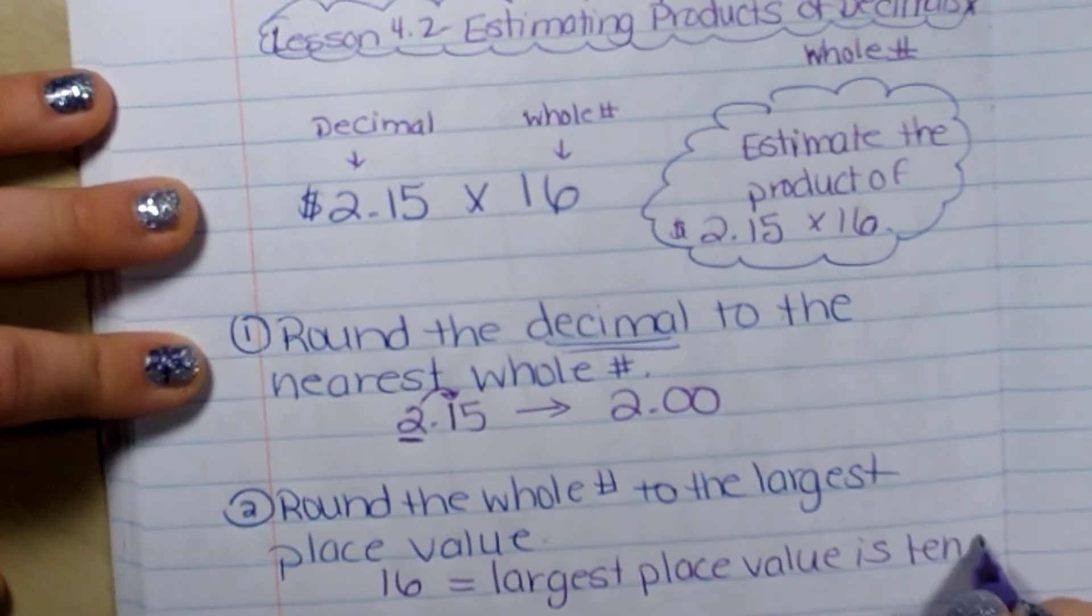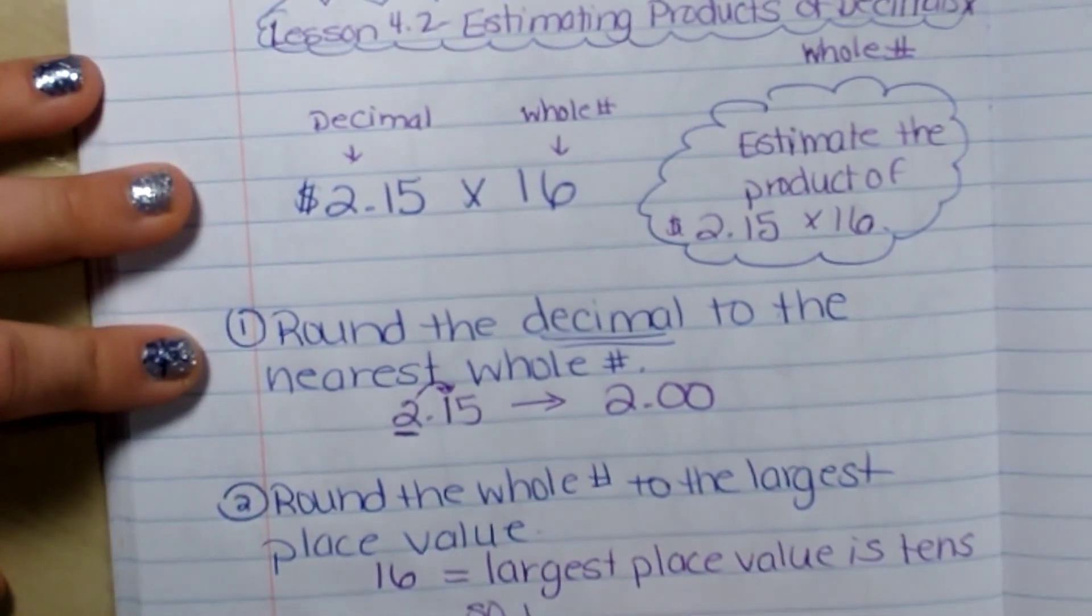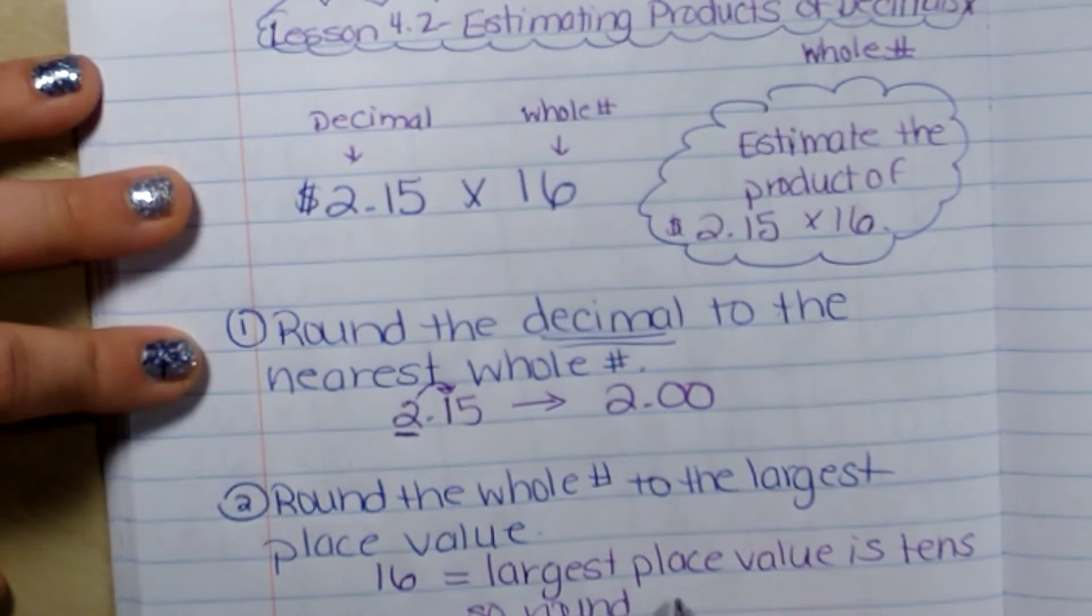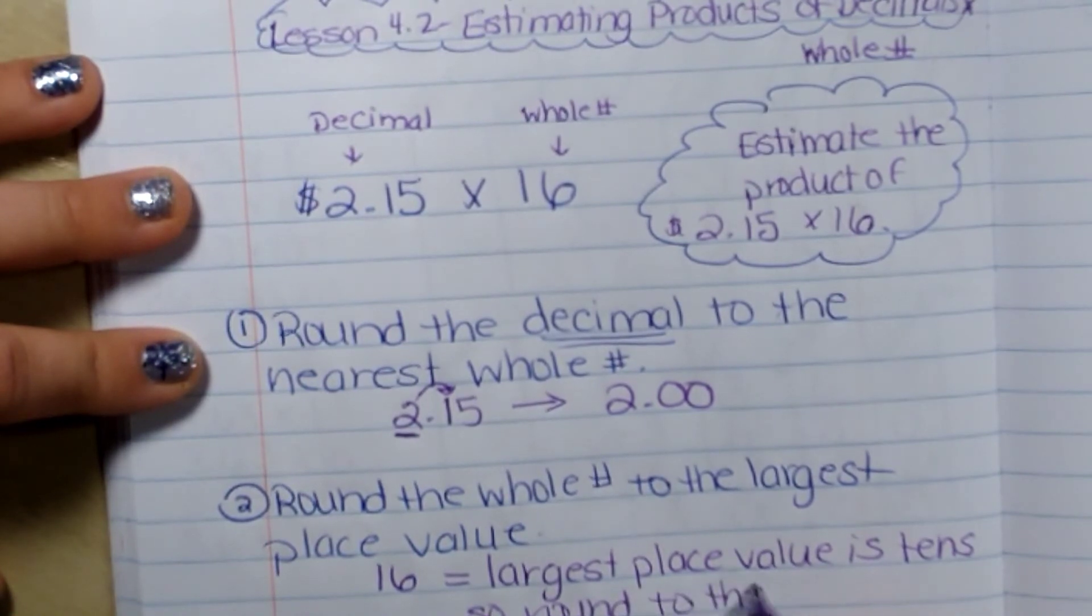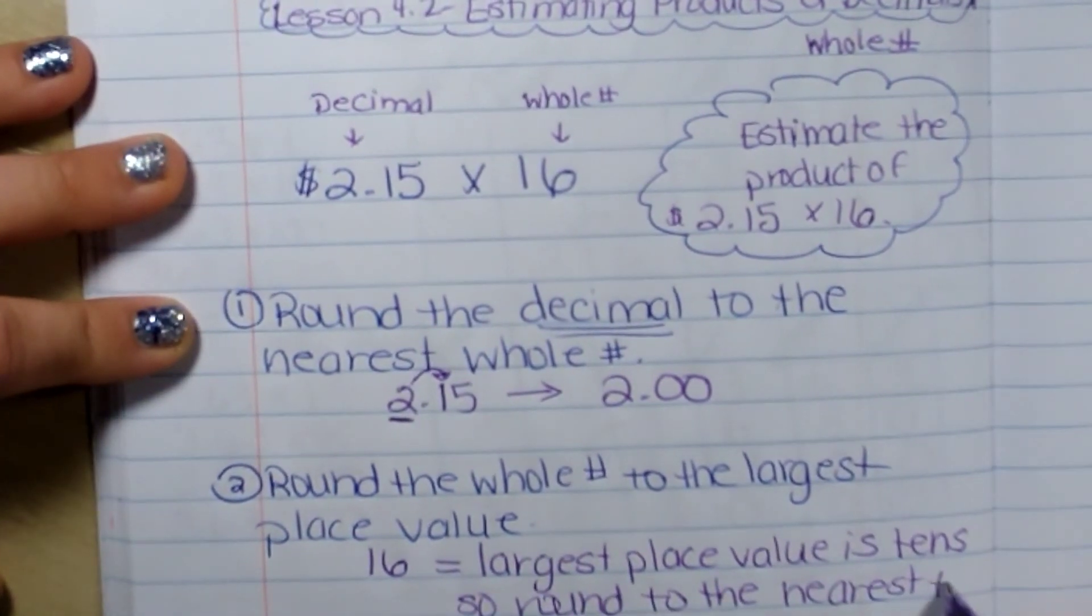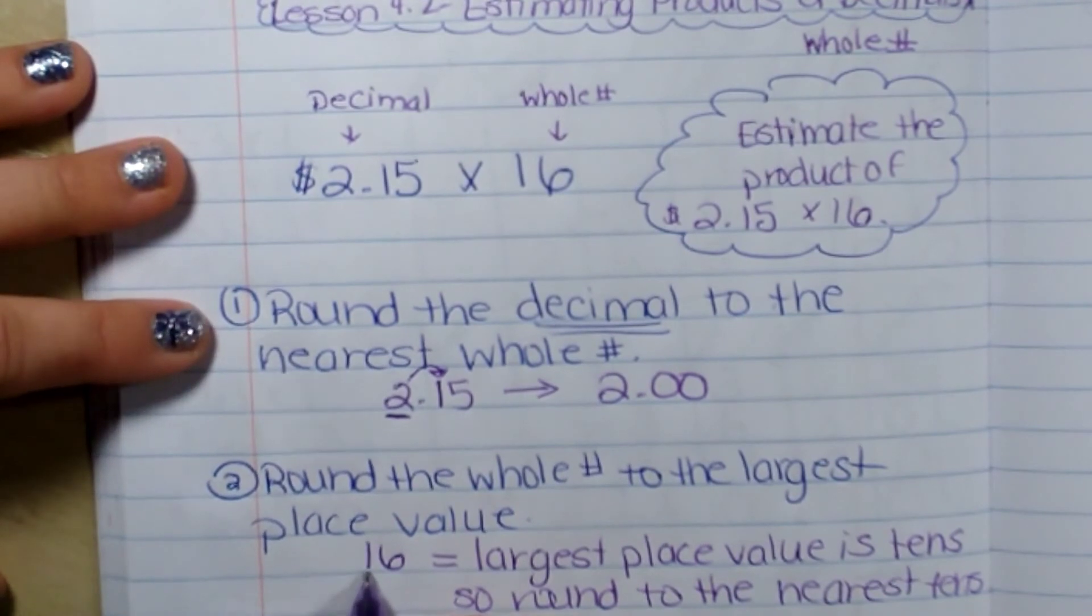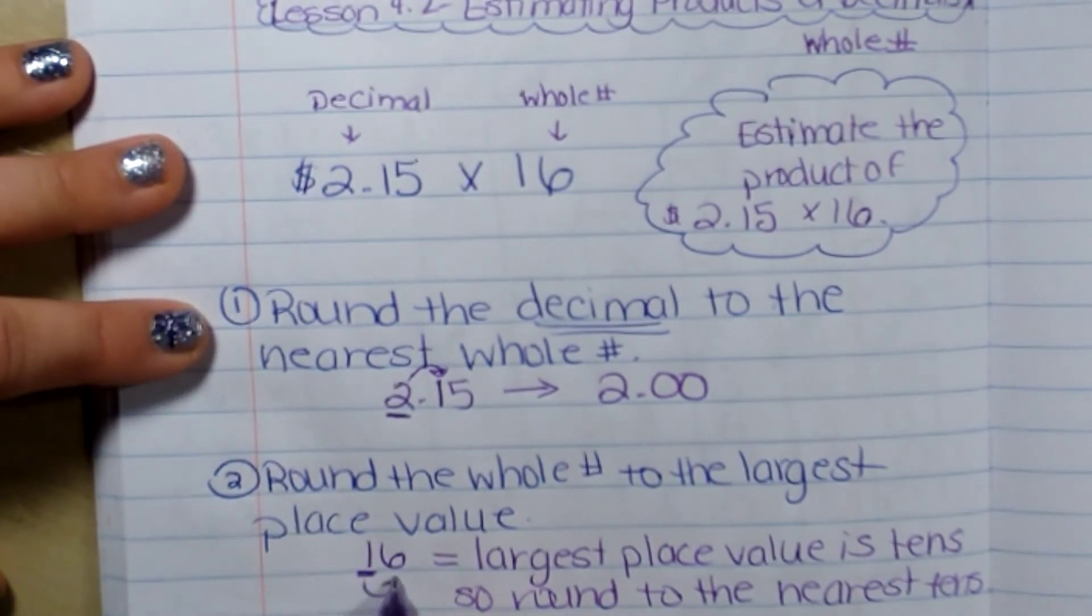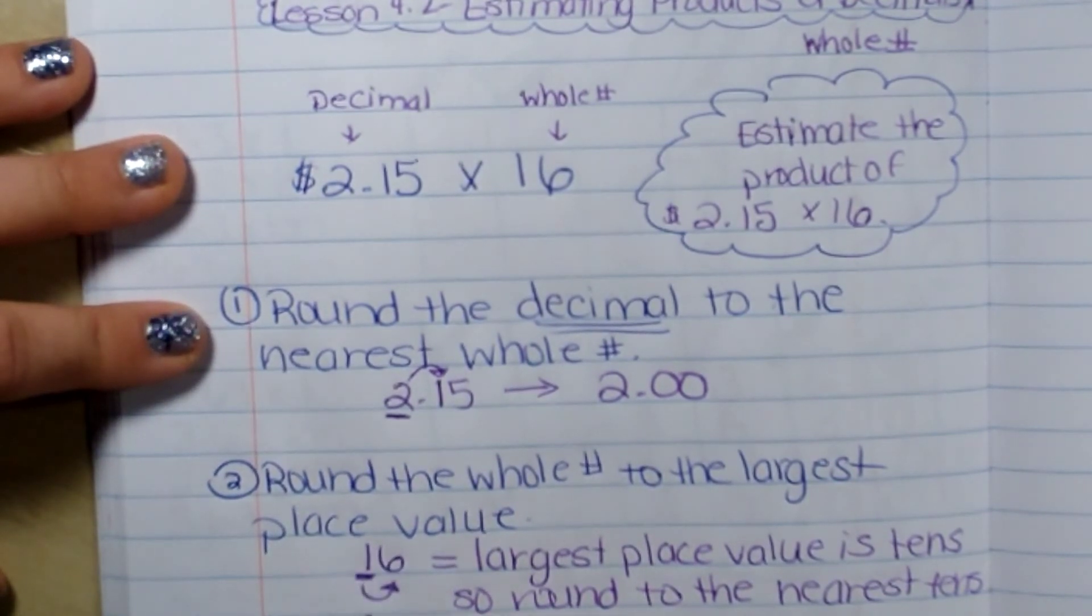So I'm going to round to the tens. If I'm rounding to the tens, I'm going to go to the tens place and look next door. Five or more, let it soar, so it's going to be 20.